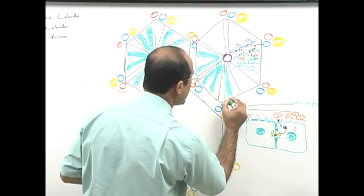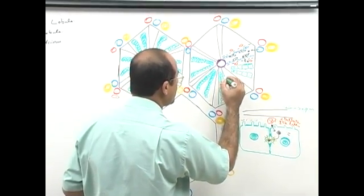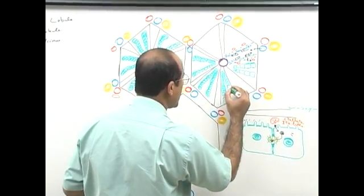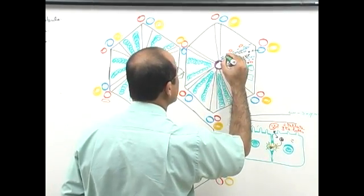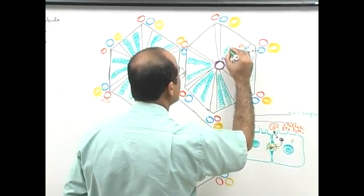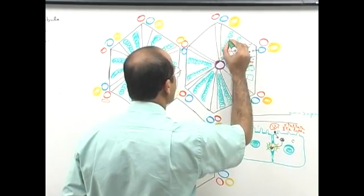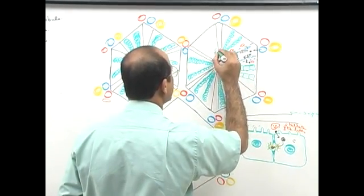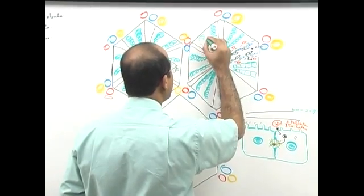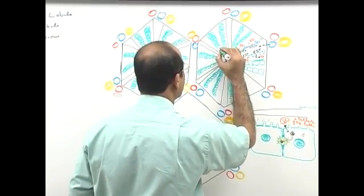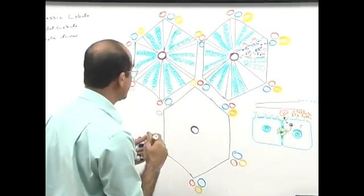Hepatocytes have about 50 Golgi units per cell because they are synthesizing a lot of proteins. Hepatocytes synthesize plasma proteins including albumin, alpha globulins, beta globulins, coagulation factors, and angiotensinogen.